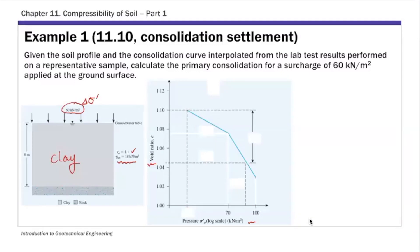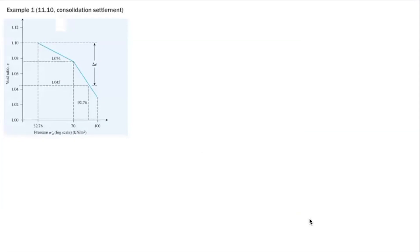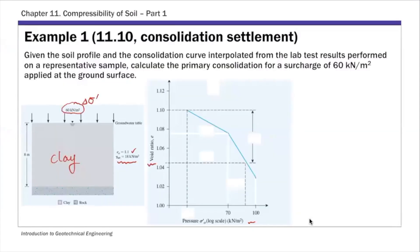So let's look at this curve here. For this calculation, I'm going to focus on this mid-clay layer here. I'm going to focus on this sample at the middle of this clay layer and use that as a representative of this entire layer. So I'm going to focus on the void ratio change on this sample.